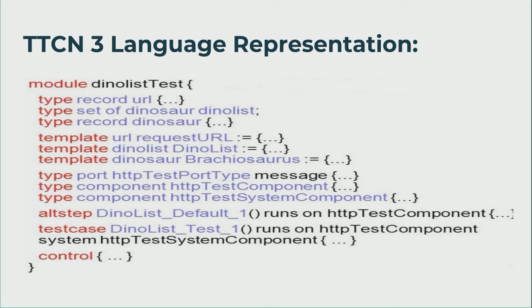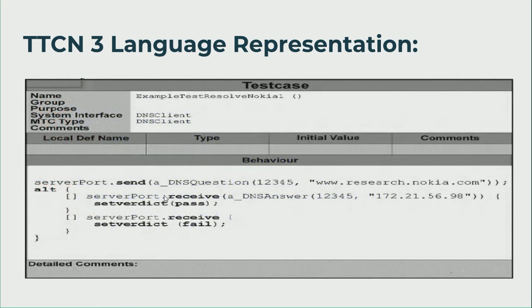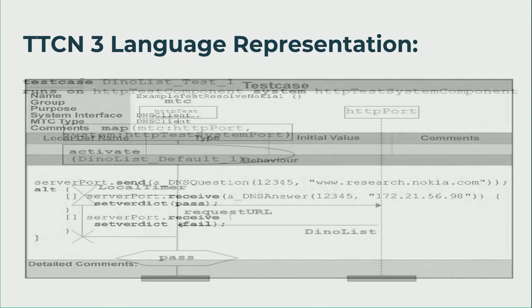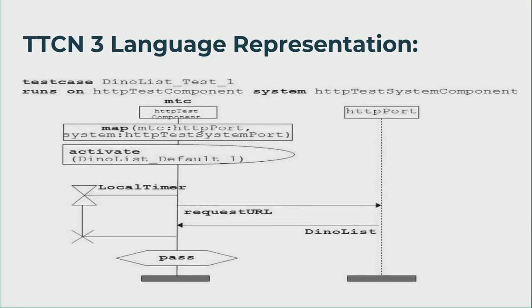Here you can see the core notation or textual part showing how to write code in TTCN-3 language. This one is the tabular format of the TTCN language, and this one is the graphical representation of the TTCN-3 language. These are the three ways in which we can represent the TTCN-3 language.